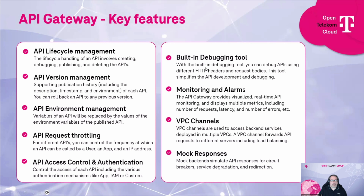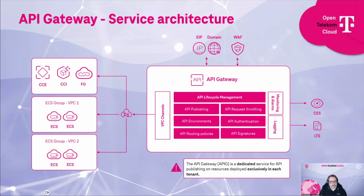Let's have a more detailed look at the architecture. When you activate the API Gateway on the Open Telekom Cloud, you get a dedicated gateway active only in your tenant, meaning you don't share it with any other tenant. You can connect it directly to the internet with a fully qualified domain name and SSL certificate, and you can even use the Web Application Firewall to secure your APIs.